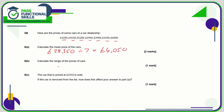The range of prices is the most expensive car minus the cheapest car. The most expensive car is £6,000 and the cheapest is £2,450. Six thousand minus two thousand four hundred and fifty is three thousand five hundred and fifty.